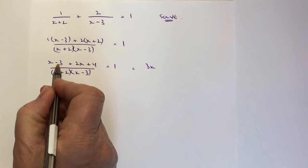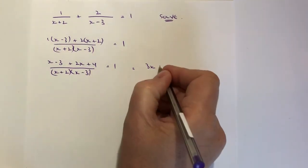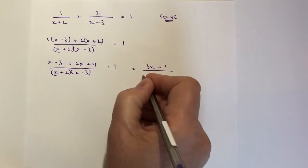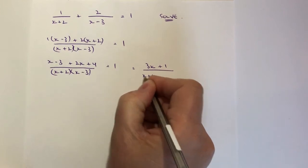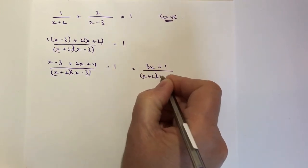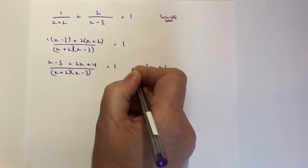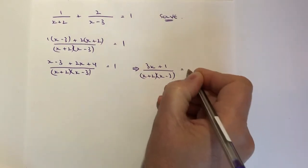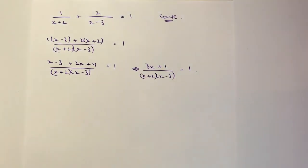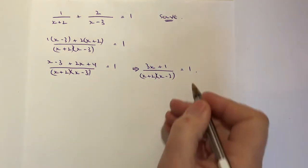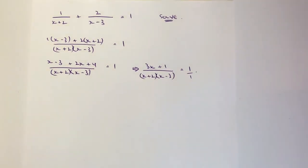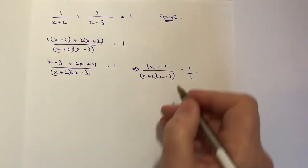I'm going to end up with 3x and I've got minus 3 plus 4, well that's going to be plus 1 divided by x plus 2 multiplied by x minus 3 and that little lot is going to be equal to 1. Now this is where it just gets a little bit trickier because what I need to do is I need to solve for x.